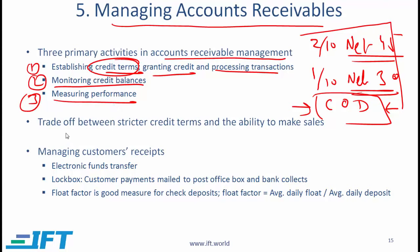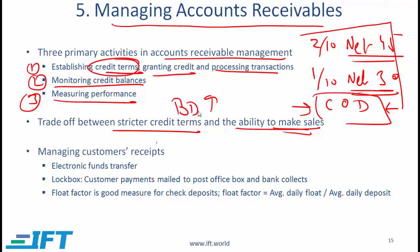The second primary activity is monitoring the credit balances, and finally we need to measure the performance of our credit function. There is a trade-off between strict credit terms and ability to make sales. If a company has very strict credit terms relative to competitors, it will lose sales because customers would rather go to a competitor who offers easier credit terms. On the other hand, if your credit terms are too lenient, customers might take advantage and your bad debt allowance might have to go up, as customers without a strong financial position may not be able to pay on time.